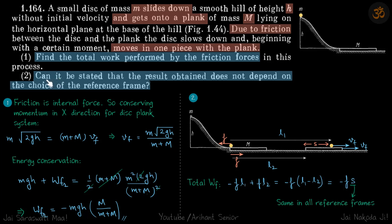Anyway for next part, can it be stated that result obtained does not depend on the choice of reference frame? So let's say that the system starts moving together when the disc is at a distance l1. So the disc has moved a distance l1 and the plank has moved a distance l2. So at this moment both the disc and the plank start moving with the same velocity Vf which is same as this.